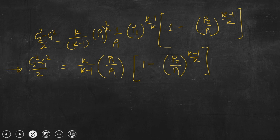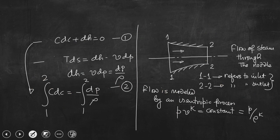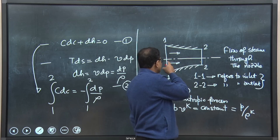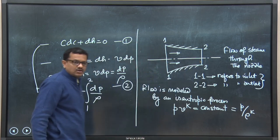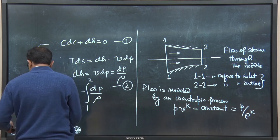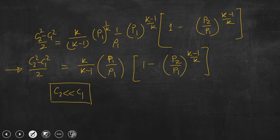This is the final expression: c2 squared minus c1 squared over 2 equals k over k minus 1 times p1 by rho1 times the bracket 1 minus p2 by p1 to the power k minus 1 upon k. This is the change in velocity of steam as it passes through a convergent nozzle. Since the cross-sectional area at section 2-2 is much less than at section 1-1, the velocity at section 1-1 is much less than at section 2-2.